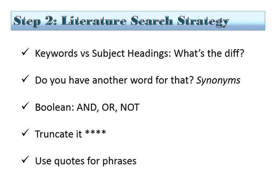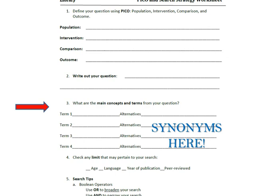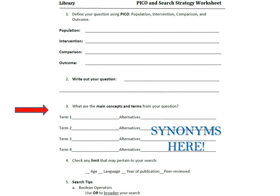Another thing to consider is the use of synonyms for terminology you might input in your search. For example, if you were searching for information on the elderly population, you might want to use different words for elderly, like older or aged. You can use the PICO search worksheet in your course shell to input synonyms and lay out your search.